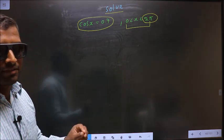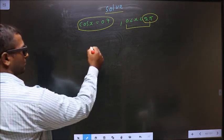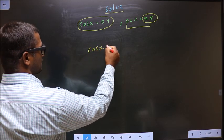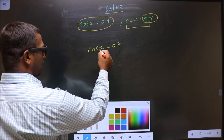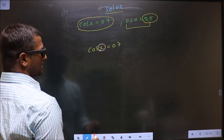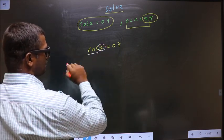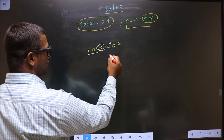The given equation is cos(x) = 0.7. To get the values for x, note that you have cos and it is positive.